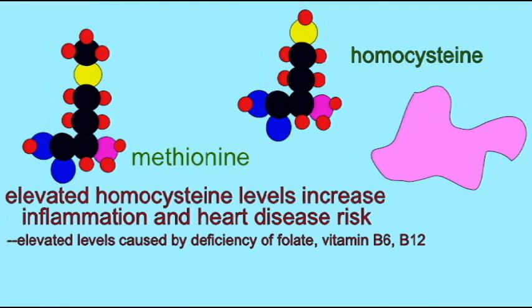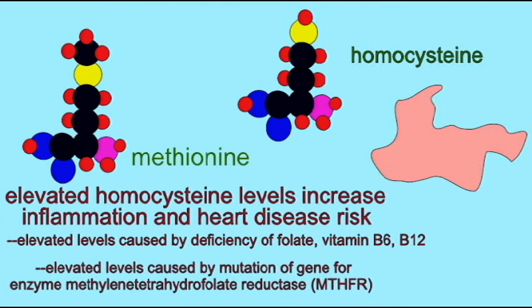There is one enzyme, methylene tetrahydrofolate reductase, or MTHFR, which is frequently mutated and can result in elevations in homocysteine levels of 20 to 50 percent. About 10 percent of the population is affected by this increase due to mutations in this gene.